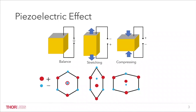This causes the positive and negative ion centers to shift, creating a polarization inside the crystal. The polarization will induce a charge on the surface. If we add positive and negative electrodes to the surface and connect them to a circuit,